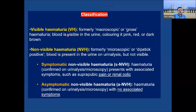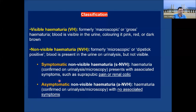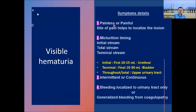Visible hematuria, or gross macroscopic hematuria, means there is frank blood in the urine coloring it pink, red, or dark brown. Non-visible hematuria is microscopic and the urine looks normal; it can be symptomatic — with pain or renal colic — or asymptomatic. The site of pain is very important; when examining the patient you must find the exact location, which indicates whether the origin is the kidney, ureter, or bladder.